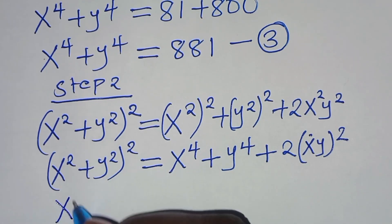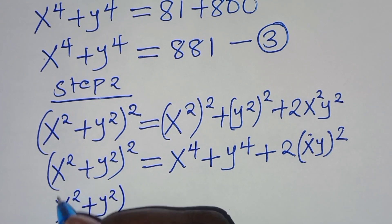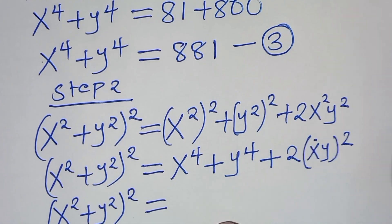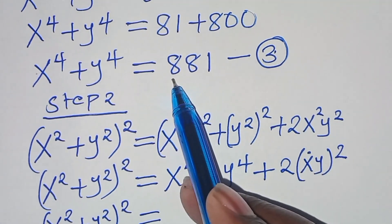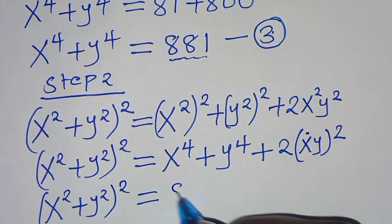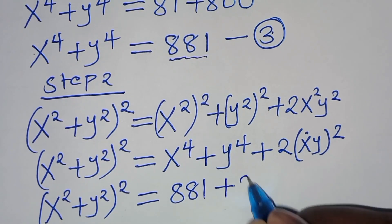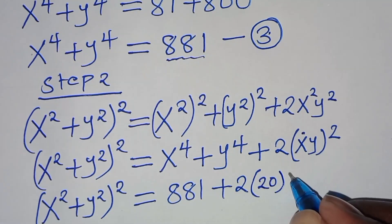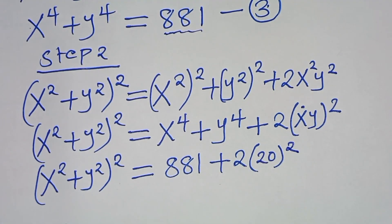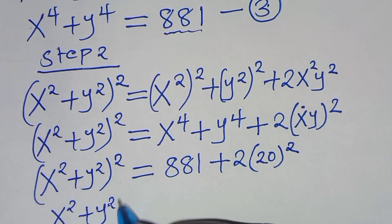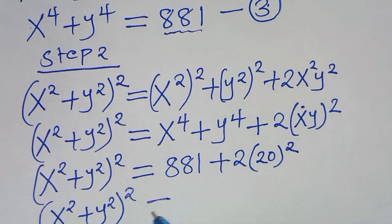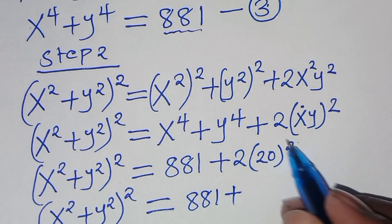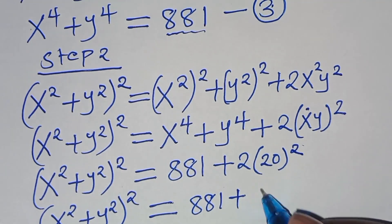This implies that x squared plus y squared, raised to power 2, equals x to the power 4 plus y to the power 4 — which is 881 from equation 3 — plus 2 times xy squared. Since xy equals 20, we have 881 plus 2 times 20 squared, which is 881 plus 2 times 400, giving 881 plus 800.